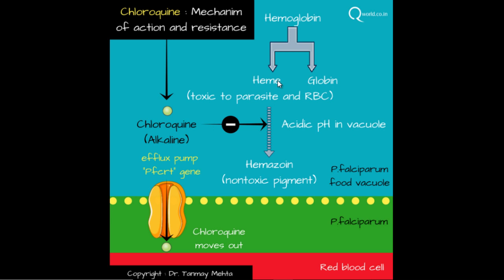Plasmodium falciparum develops a resistance mechanism against chloroquine by developing a flux pump, coded by the PFCRT gene. This pump immediately expels chloroquine that enters the food vacuole, preventing it from acting. As a result, hemoglobin digestion and conversion to hemozoin pigment continue as before, and the parasite does not get killed.